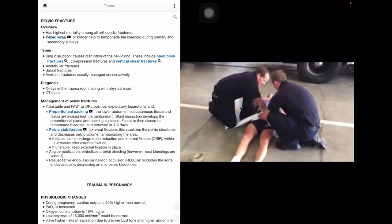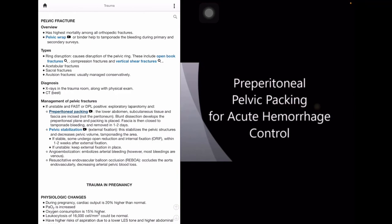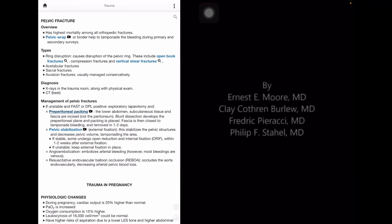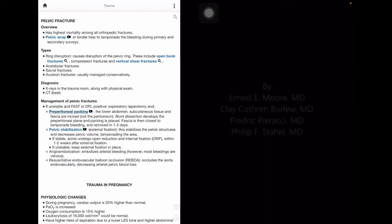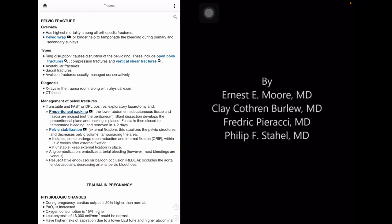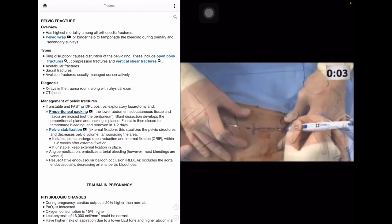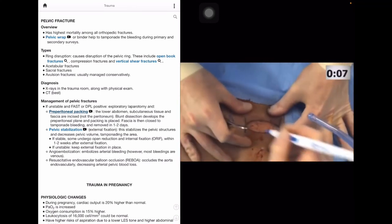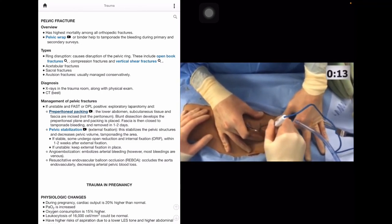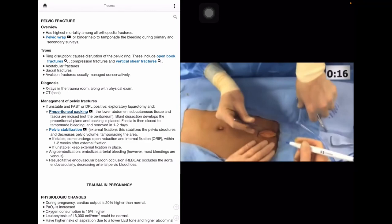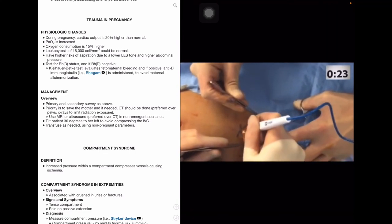We can also see here for management of pelvic fractures, we have peritoneal packing, pelvic stabilization, angioembolization, and resuscitative endovascular balloon occlusion, REBOA, for patients that are unstable and have a positive FAST or DPL. Before performing any of these techniques, we would need to perform an exploratory laparotomy. On this video, we can see a pelvic packing surgery in real time.